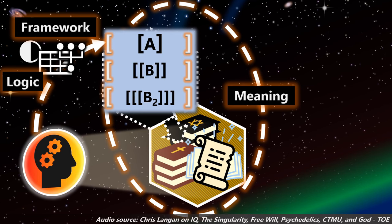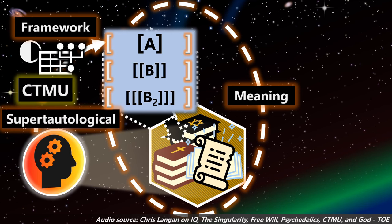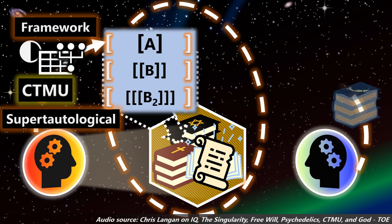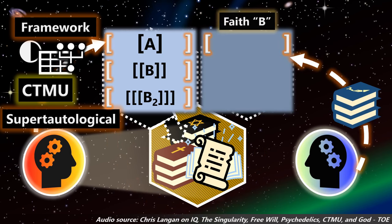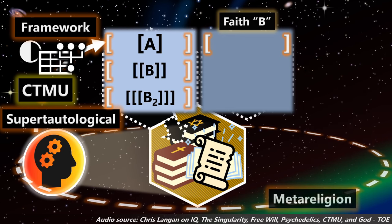There are ways, if you have a general framework that is super tautological and you know it's a fact, all you have to do is worry about interpreting these different religions so that they're consistent within this framework. So that's what the CTMU, that's why I call it a meta-religion.